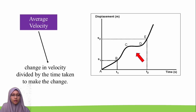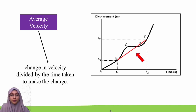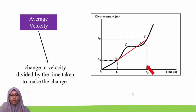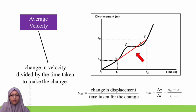On the other hand, average velocity is the change in displacement divided by the time taken. If we want to find the average velocity from time t1 to t2, we draw a straight line from point B to point E, and the gradient of this line equals average velocity: (s2 − s1) divided by (t2 − t1).